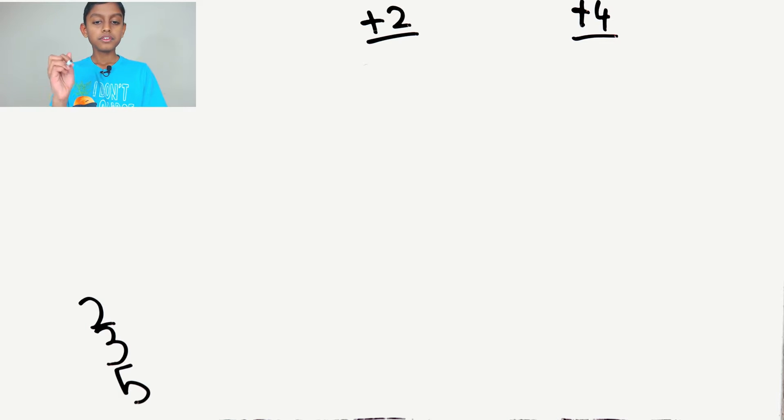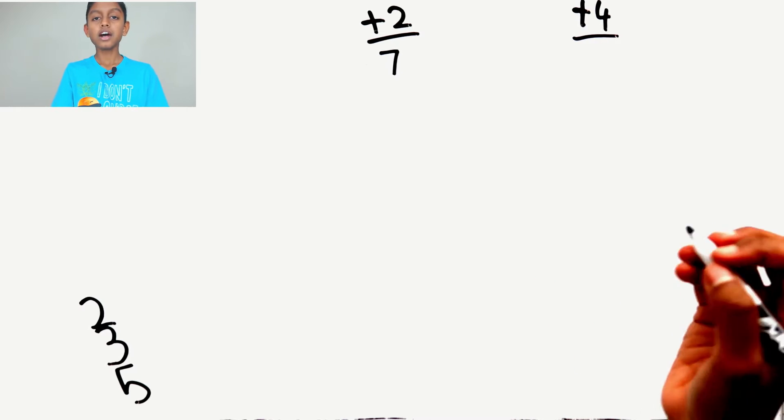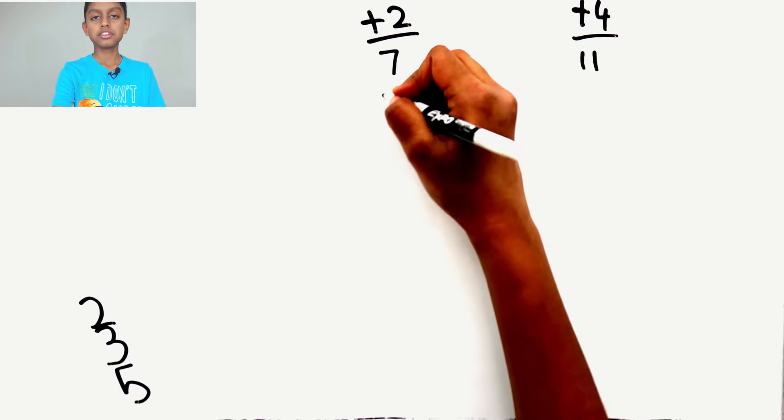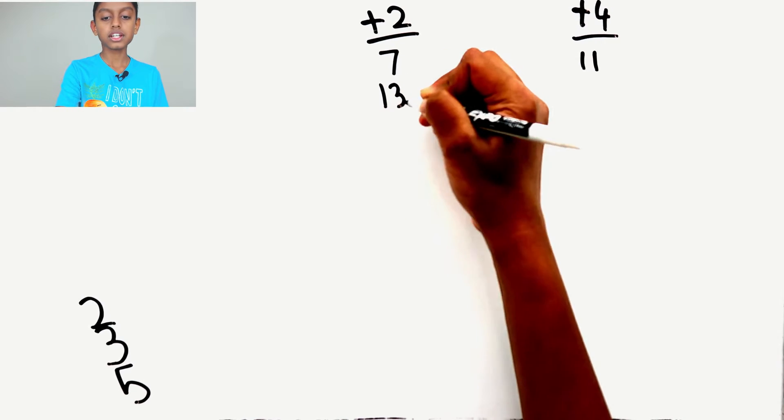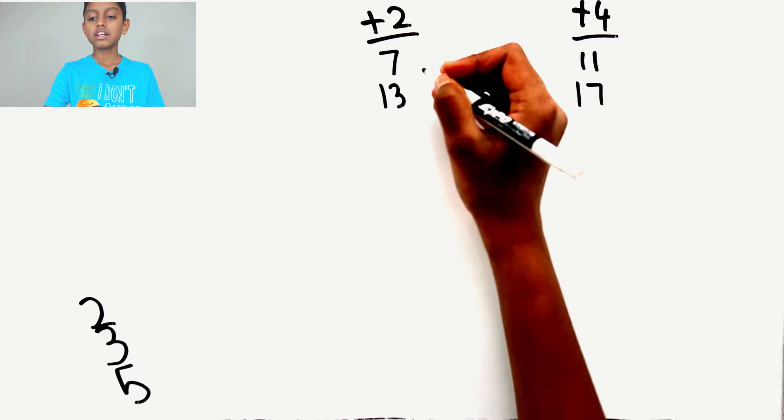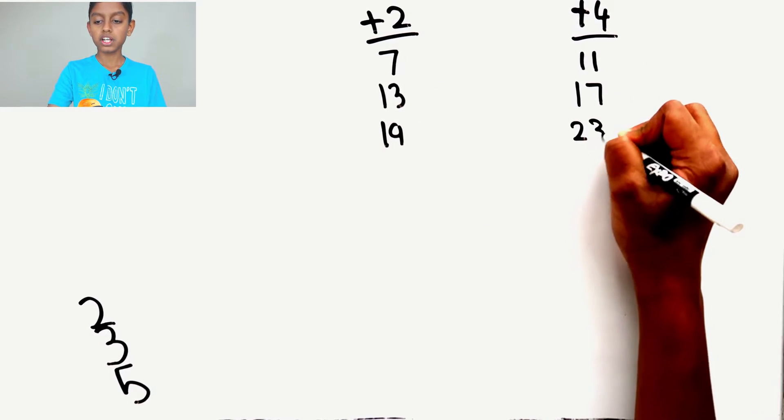So now, we add 2 to 5 to get 7, then add 4 to 7 to get 11, add 2 to 11 to get 13, add 4 to get 17, add 2 to get 19, add 4 to get 23.